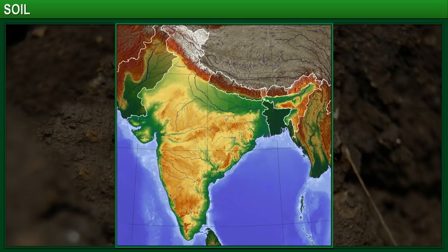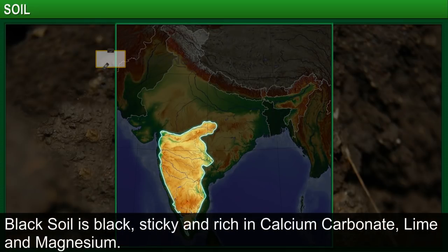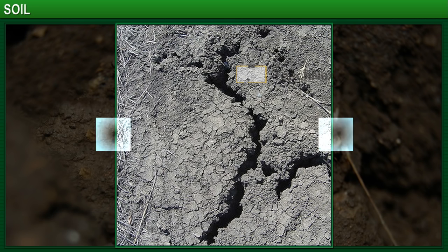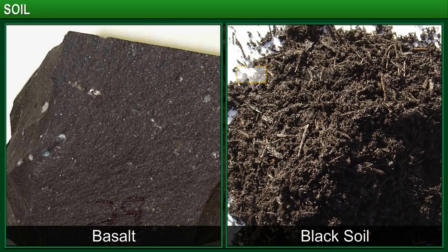For example, the black soil that we find in the Deccan region in south India is black in color, sticky, and rich in calcium carbonate, lime, and magnesium. It is known for its water holding capacity. All these properties can be attributed to basalt, the parent rock from which this type of soil is formed.